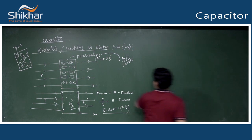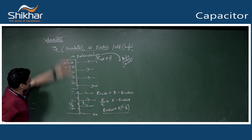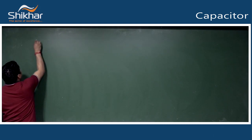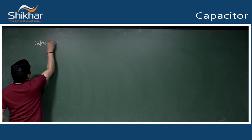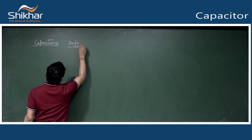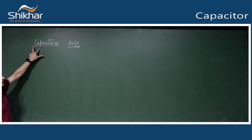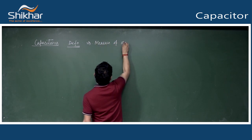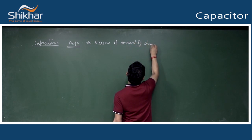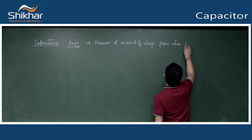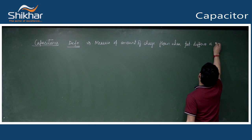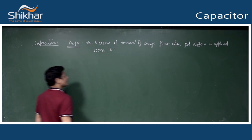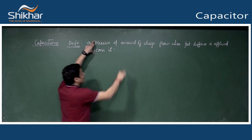Capacitance: its definition is - it is a measure of amount of charge flown when a potential difference is applied across it. I recommend writing the definition from NCERT rather than this one.